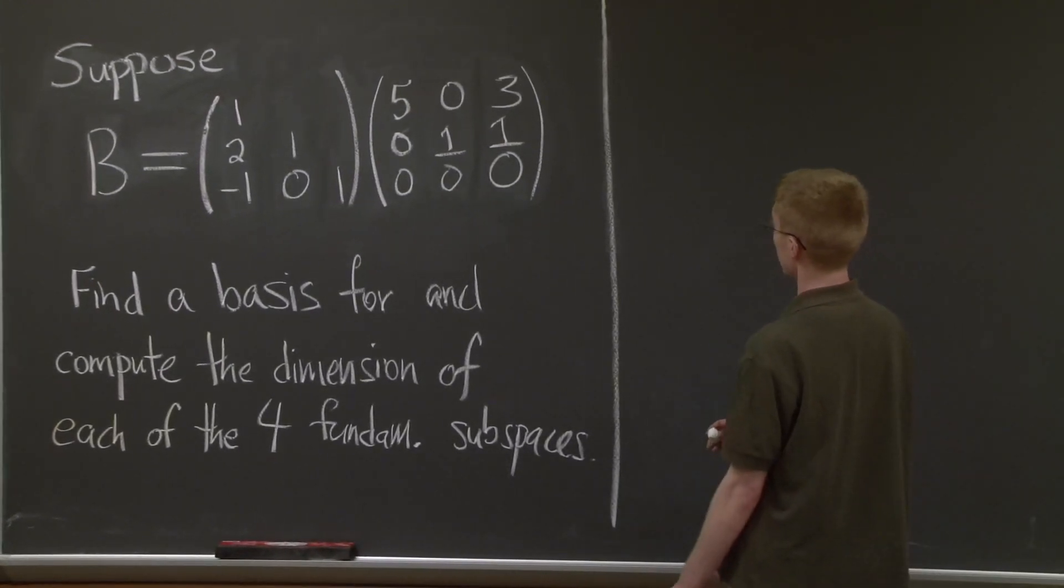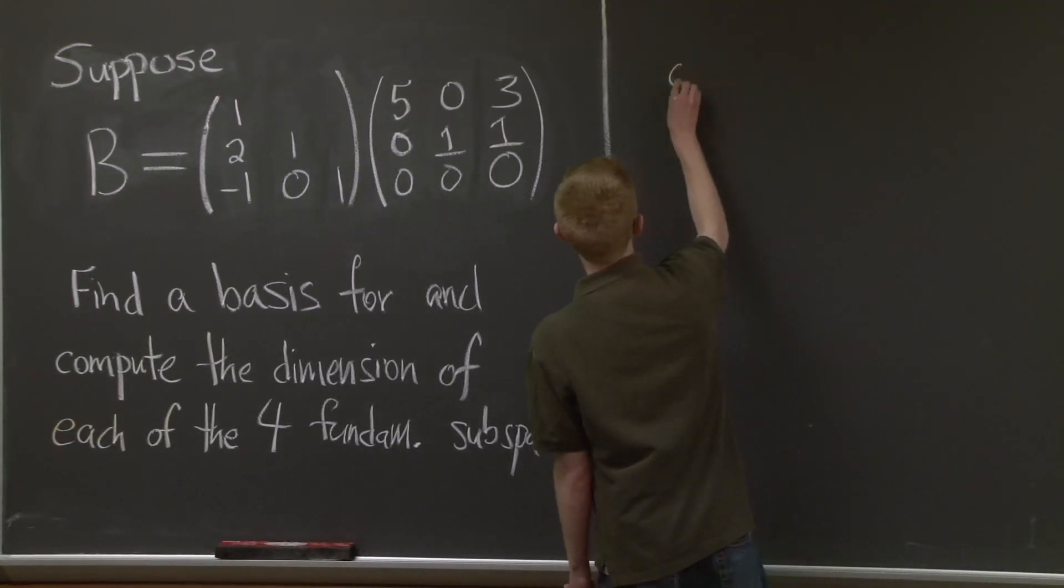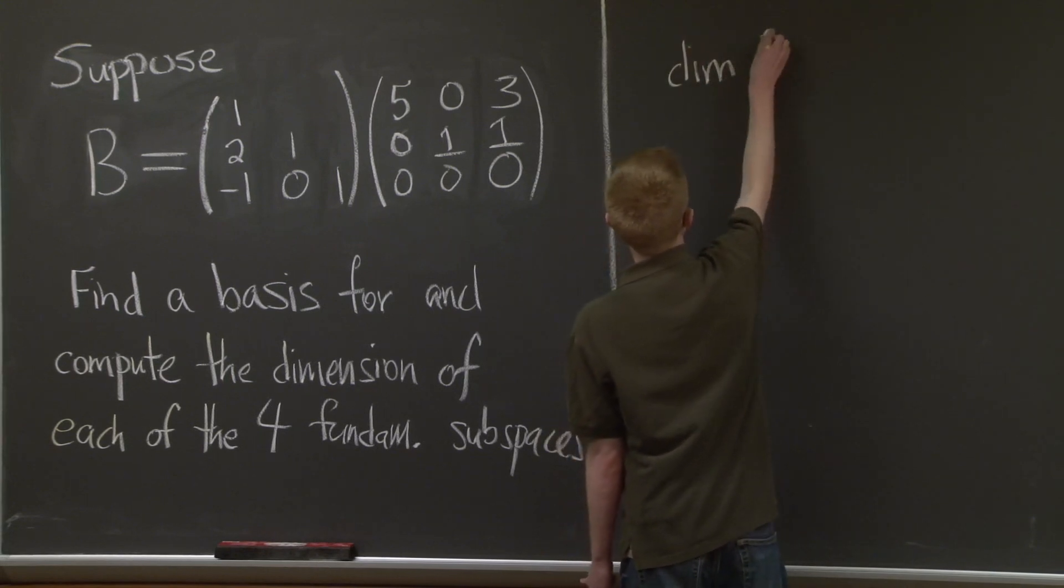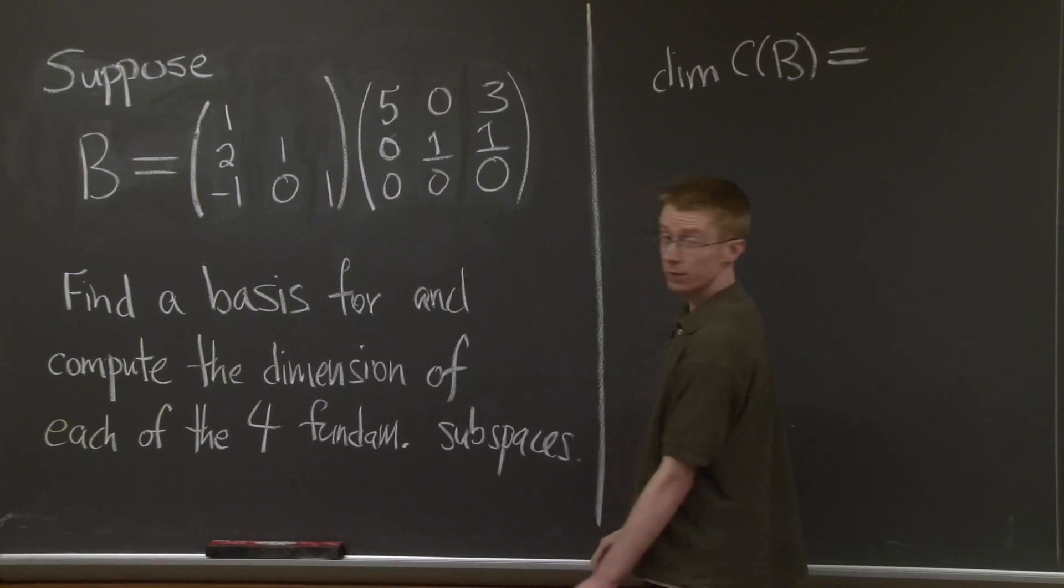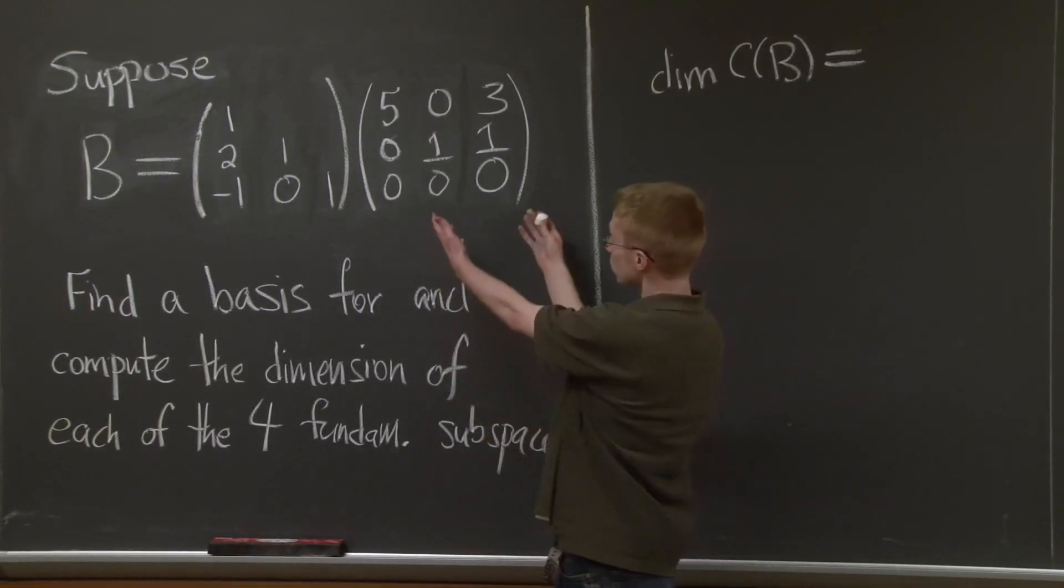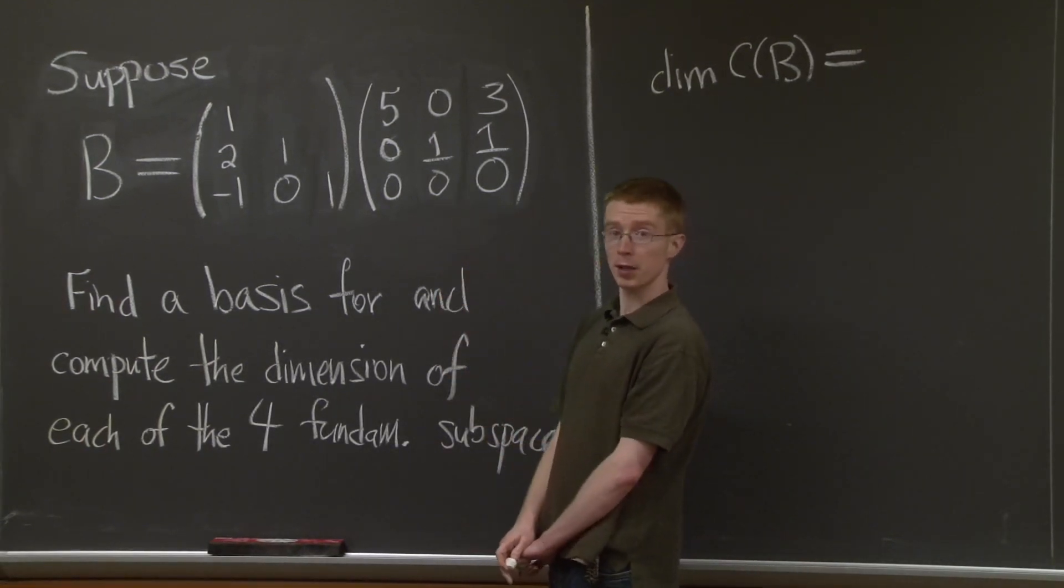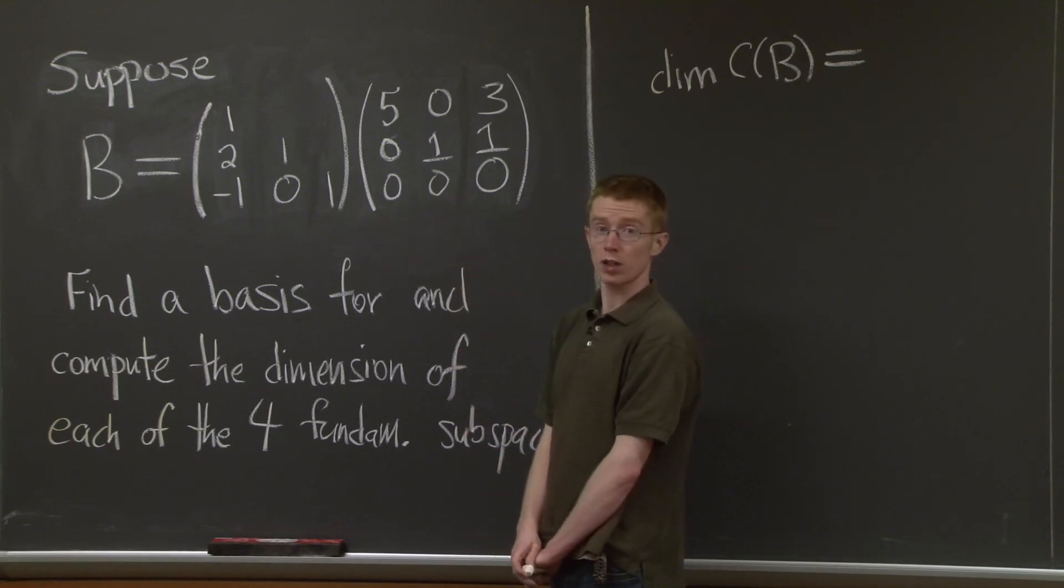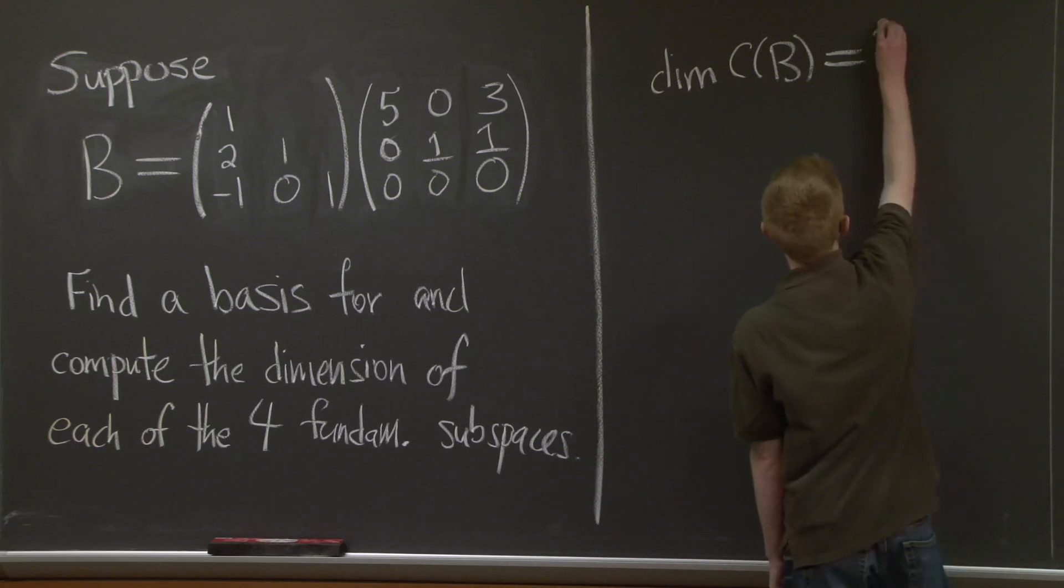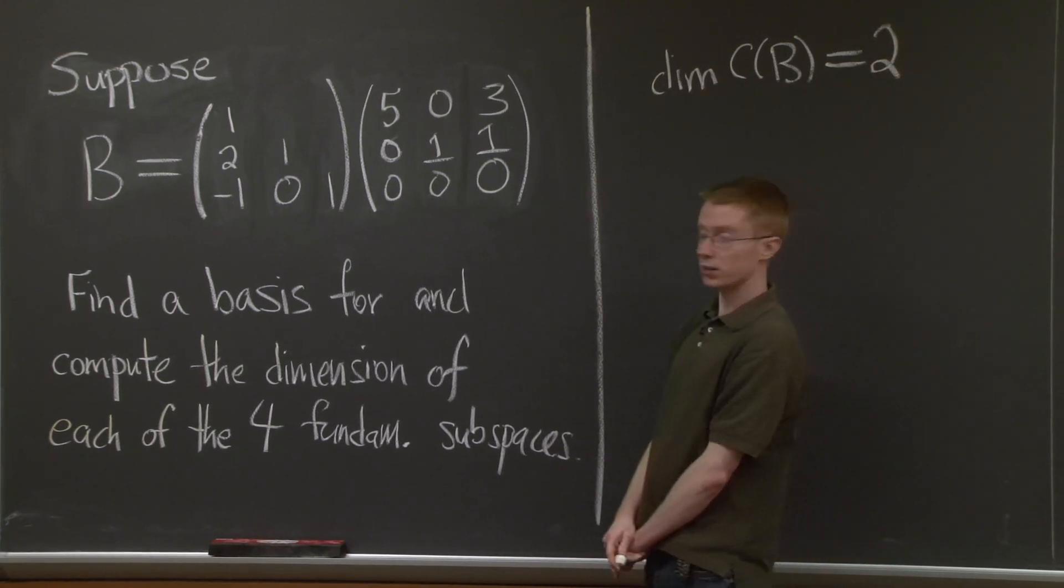Let's start with the column space. First, let's say what the dimension of the column space is. So let's look at our U matrix. How many pivots do we have? We have two pivots. So the column space has dimension two. This is the number of pivots.